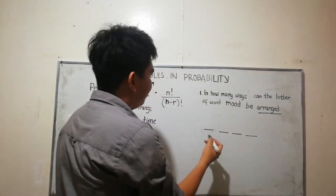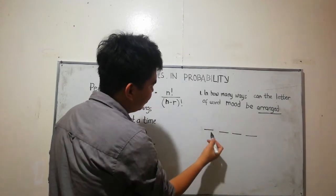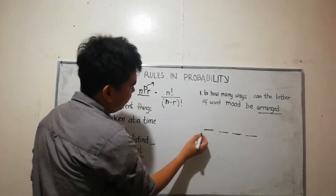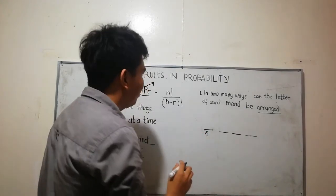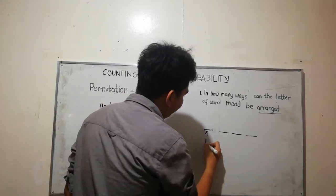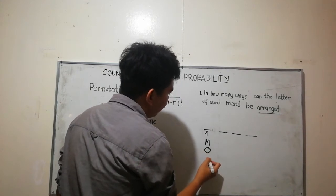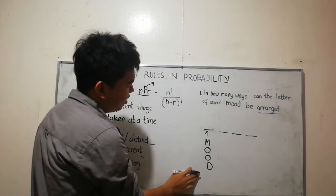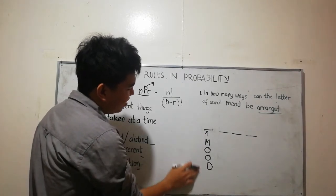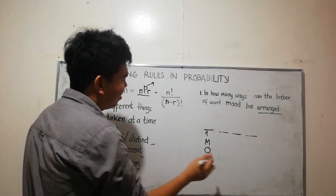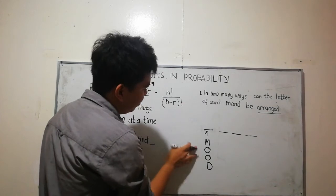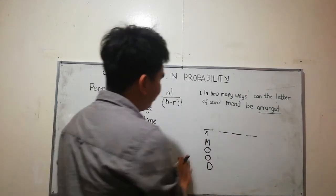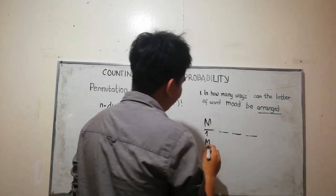MOOD is a four letter word, so I'll put first four slots. In the first slot, I can put M or O or O or D. Take note I'm using 'or'. Or means you can choose any of the four, so I have four ways. Let's say I'll choose M, so I have four ways.